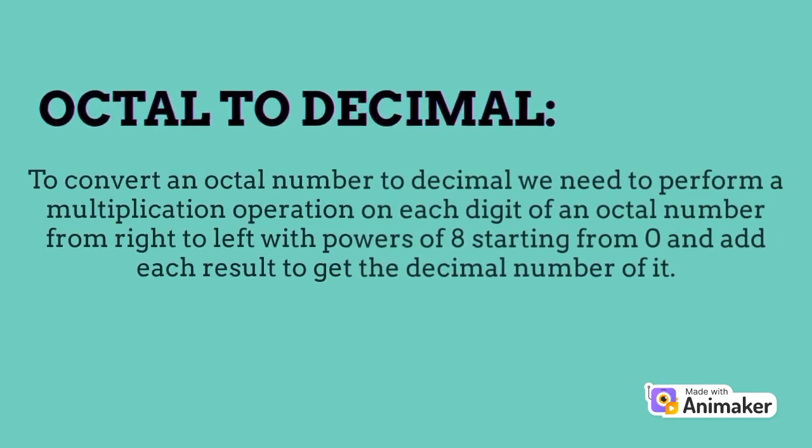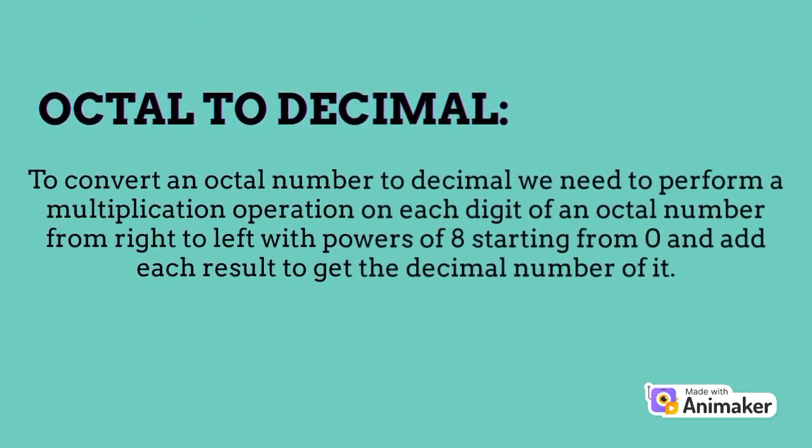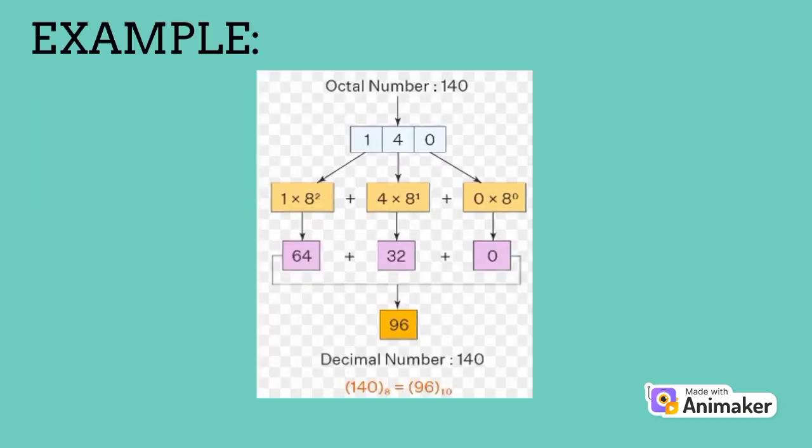Octal to decimal. To convert an octal number to decimal, we need to perform a multiplication operation on each digit of an octal number from right to left with powers of 8 starting from 0, and add each result to get the decimal number. Here is an example of octal to decimal conversion.